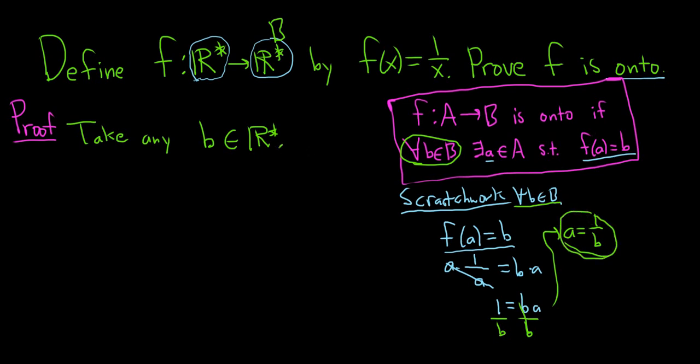And we know what a is going to be. We know it's going to be 1 over b because we figured it out. So then b is not 0 because it's in r star. So a equals 1 over b makes sense. We can actually write it down, and it's also non-zero, and it's in r star. And this time we're talking about this r star, right, a.